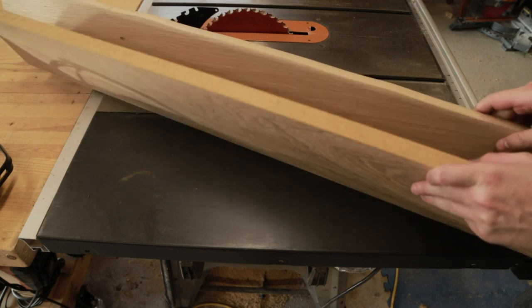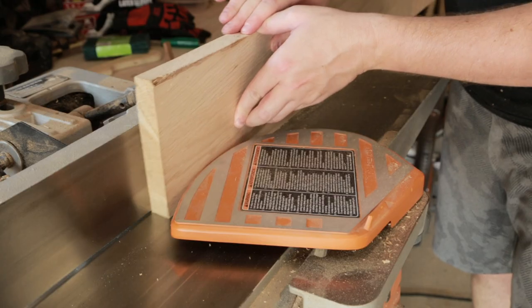These two boards are going to be joined and glued together to make a larger panel for the back of the rack.